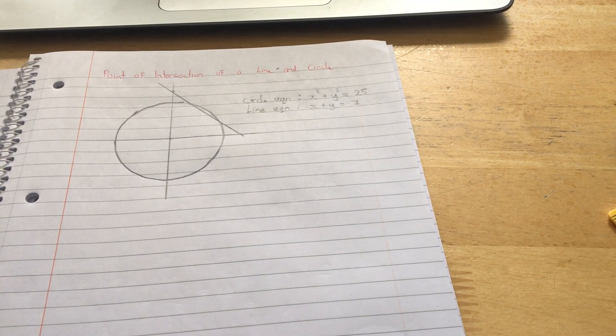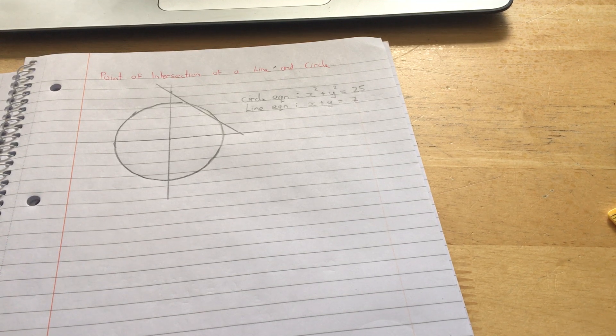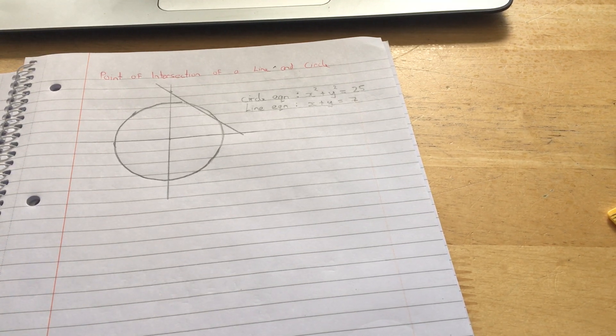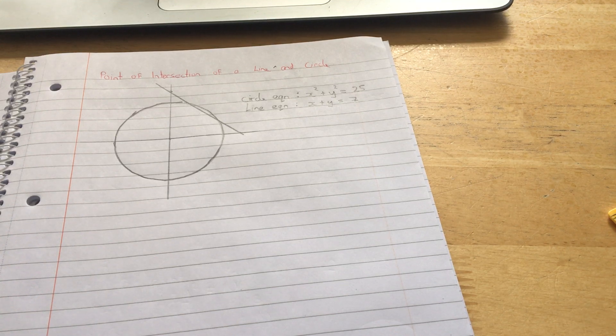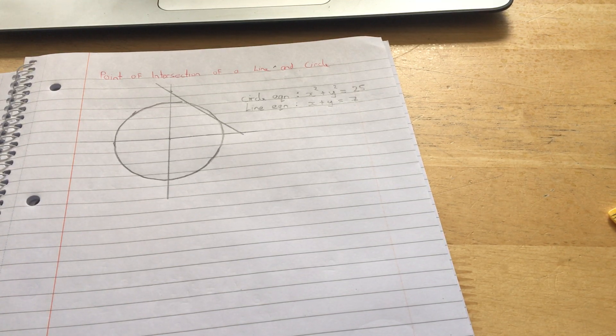And it's how to find the point of intersection for a line and a circle. We have studied the equation of the line before, and we've studied the equation of the circle before.